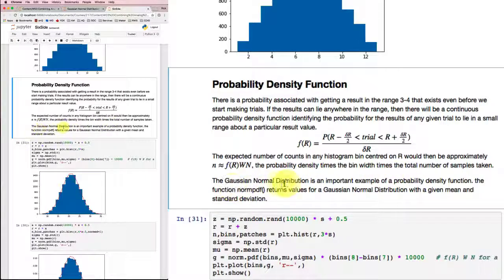And the Gaussian normal distribution is a probability density function. We've got that pdf function that we got before. And the function norm pdf returns those values for a Gaussian normal distribution for a given mean and standard deviation. So we should be able to get those values back and compare what we thought we should get in terms of number of counts to what we actually get. And that's what I'm going to do down here.